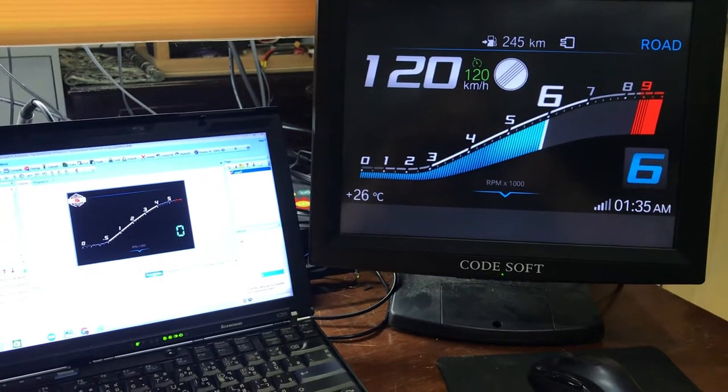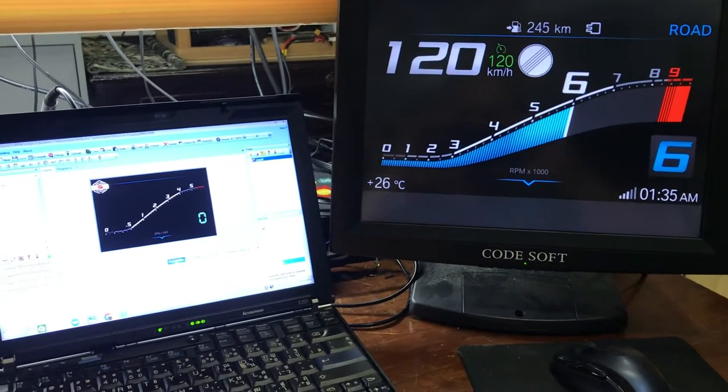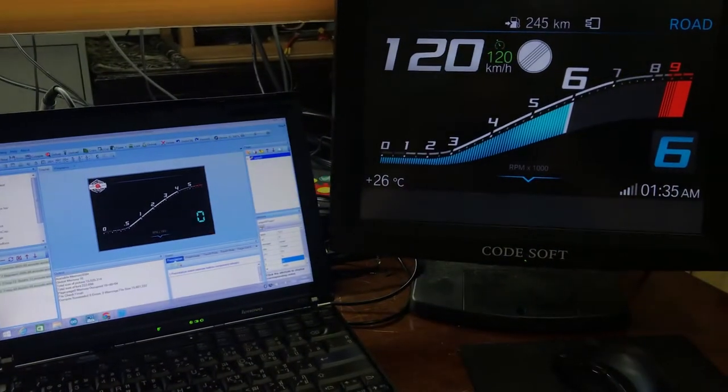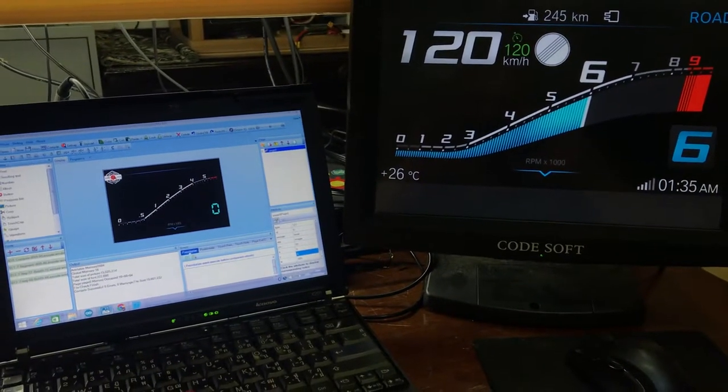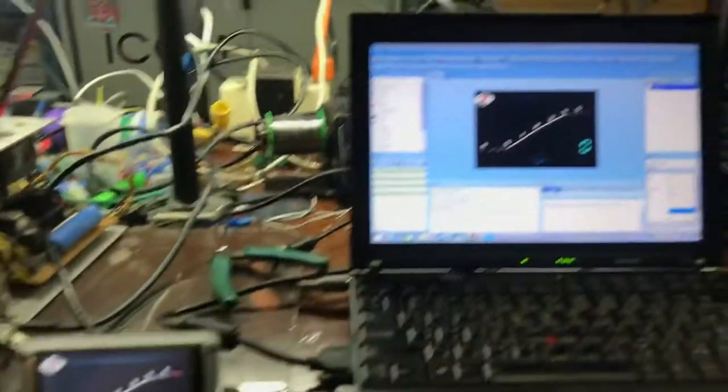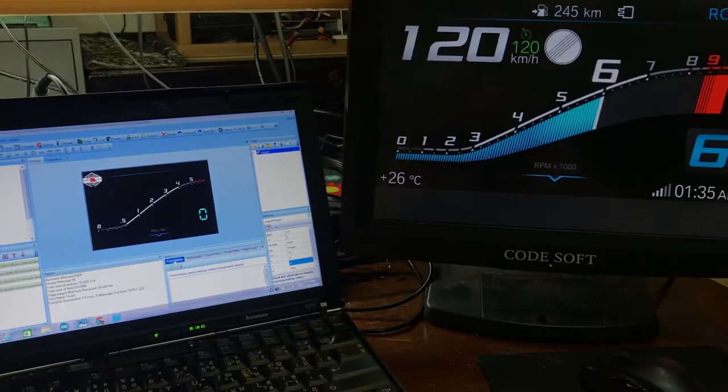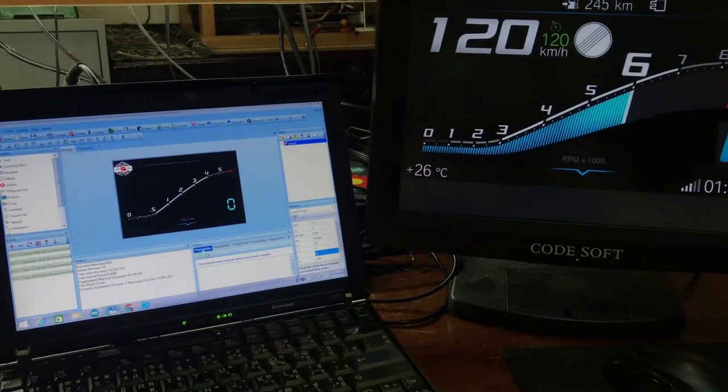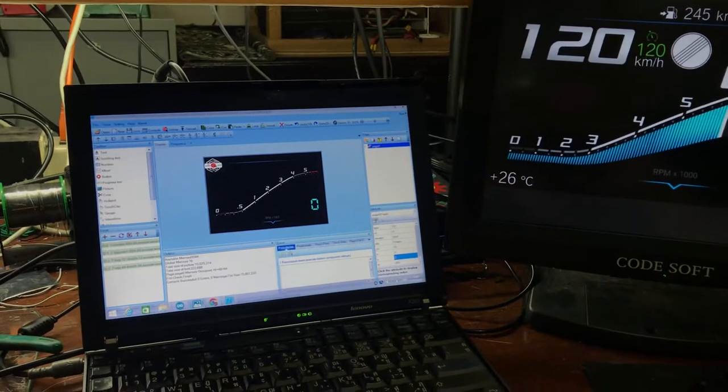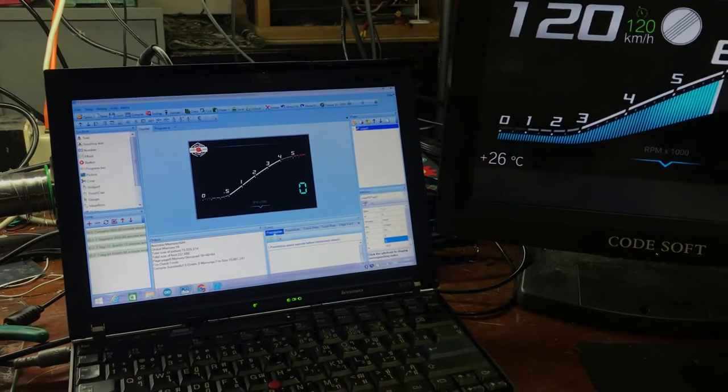Hello everybody, this is the project for a tachometer for go-cart front panels. I use the Nexin display. This is the basic display, it's really cheap, like five to six hundred dollars. The enhanced version might be more expensive.